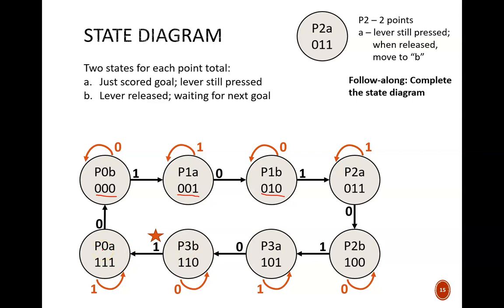Because this is a Mealy machine, which factors in the current input. So, being at 3 points and currently scoring another point is the condition needed to output the high signal and end the game. The temptation at this point is to go back to the starting state, but the circuit does need to pass through an intermediate state first, here called P0A.